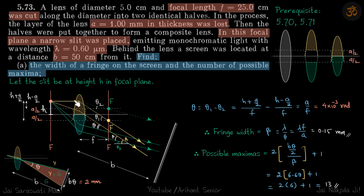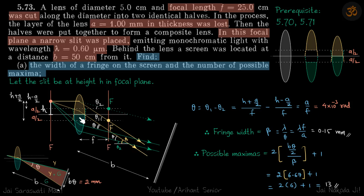A parallel line falling on the yellow part of the lens will pass through its focus. Since the slit is on the focal plane, every light ray from the source passing through the yellow lens will be parallel to this line. Similarly, for the green part, if that lens were complete the parallel ray would pass through its focal point — so all rays through the green lens are parallel to that reference ray.